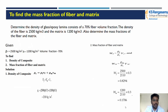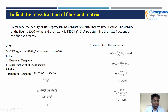Here Vf is the fiber volume fraction and Vm is the matrix volume fraction, and Vf + Vm = 1. Substituting the values, the density of the composite is 2100 kg/m³. This is the result from the first substitution.